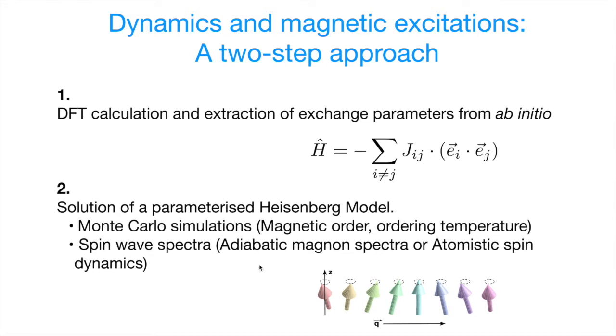The excitations in Heisenberg magnets look like this. They form spin waves. These excitations are dispersive, and the dispersion can be calculated either by using atomistic spin dynamics or directly calculating adiabatic magnon spectrum, which in practice is just diagonalization of Fourier transform of JIJ matrix.